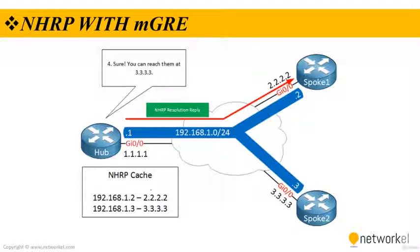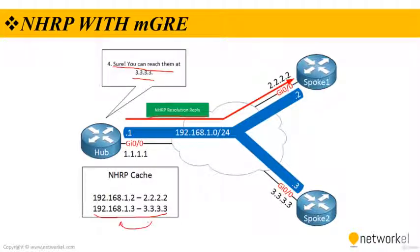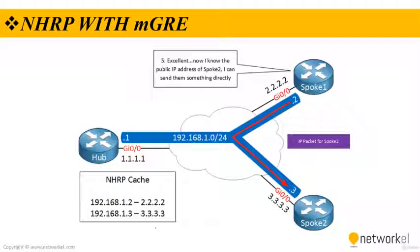On the next step, the hub router checks its cache, finds an entry for spoke 2, and sends an NHRP resolution reply. It replies that spoke 2 can be reached at 3.3.3.3. This is the entry in the hub's cache that is used to reply to spoke 1's request. Now spoke 1 knows the destination public IP address of spoke 2 and is able to tunnel traffic directly.